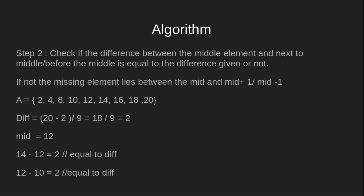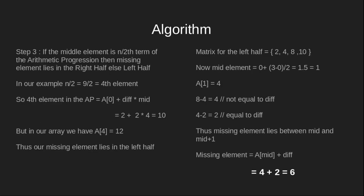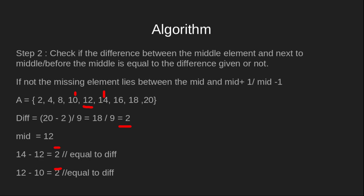Step two says to check whether the difference between the middle element and its neighbors equals the common difference. We check the neighbors of middle element 12, which are 14 and 10. If the missing number is in the neighborhood, we don't need to divide the array further. We find 14 minus 12 equals 2, which equals the difference, and 12 minus 10 also equals 2. Thus our missing element does not lie in the neighborhood of the middle element.